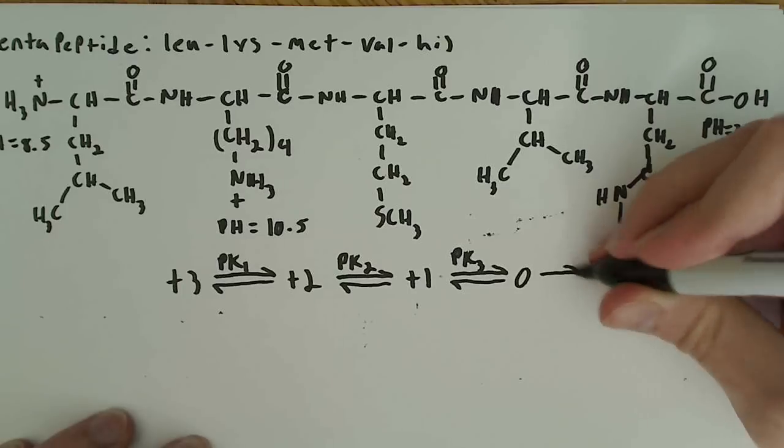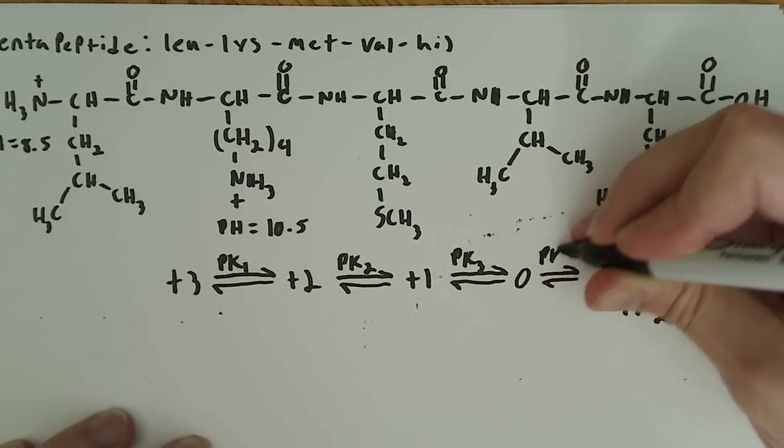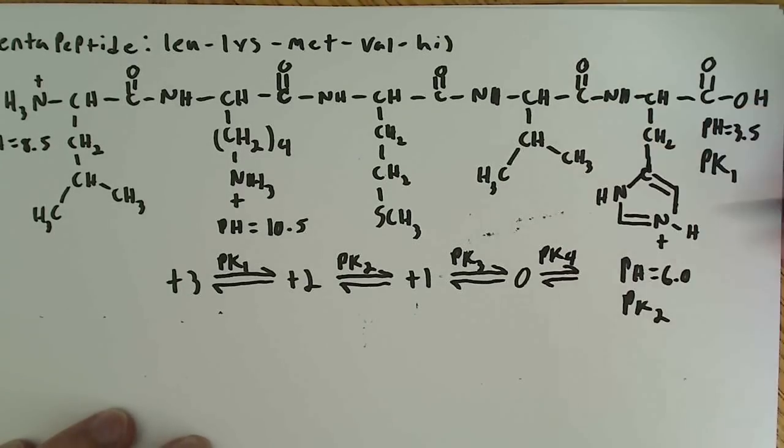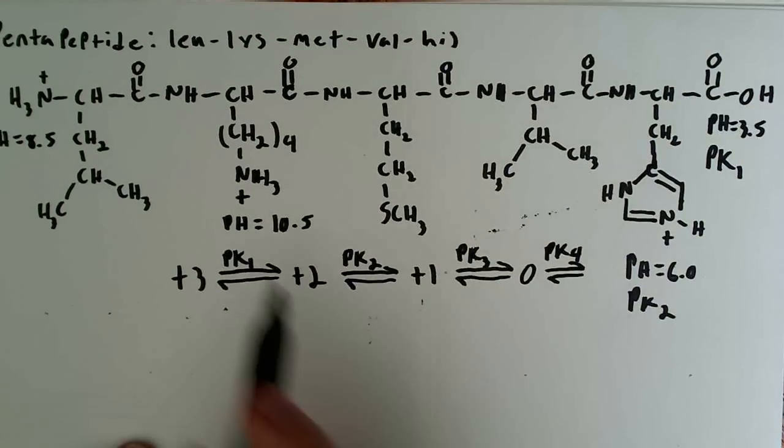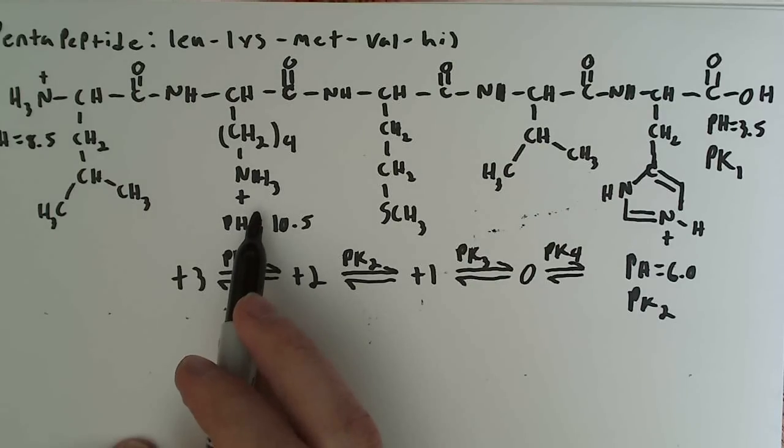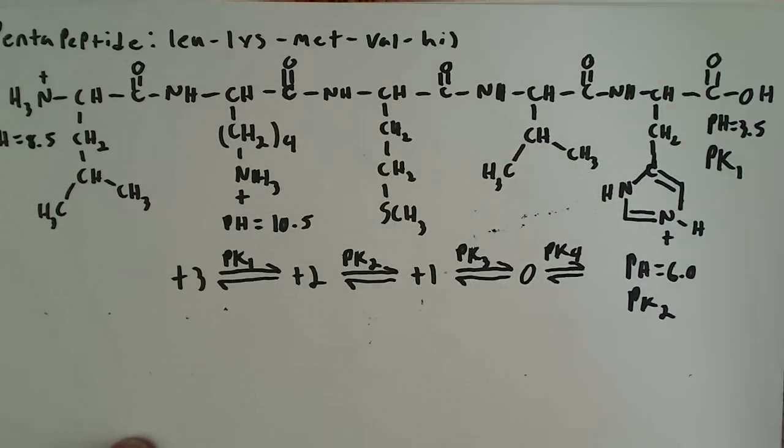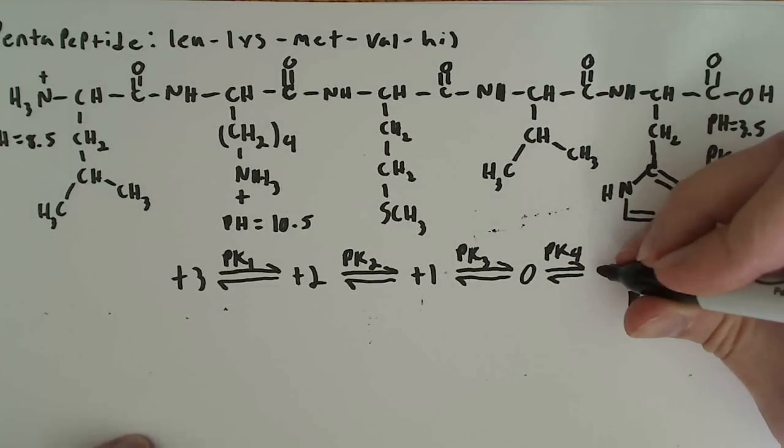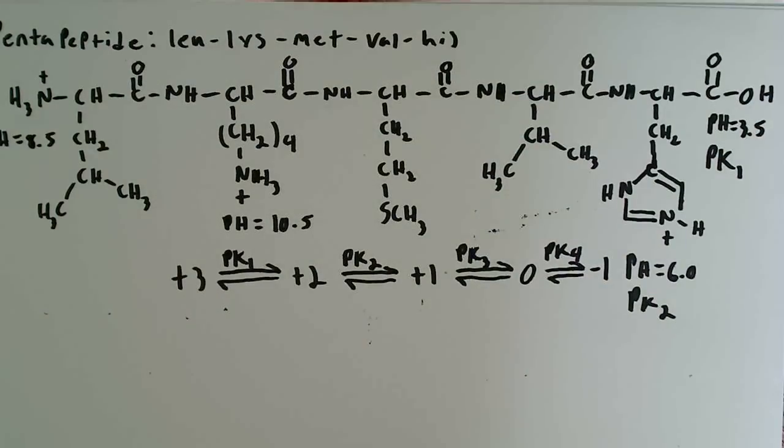And the last one, which will be pK4, the last one to lose the proton is going to be the lysine over here, and that's going to lose it at 10.5, and that's going to give us an overall charge of negative 1. So I think that about covers it, we'll have an overall charge of negative 1, so we have everything we need now to begin just drawing the titration curve and then calculating the pI and such.